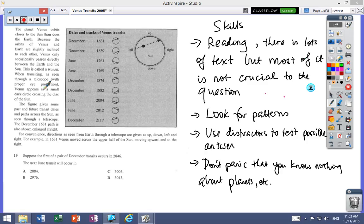We're looking at a unit from 2005 that looks like a science type task, but you don't actually have to study a particular subject to have the skills to get through this. In this particular question, the skills are reading—there's a lot of text but most isn't crucial. When you see numbers, realize there's probably patterns. Look for the distractors, test possible solutions, and don't panic that you know nothing about planets.